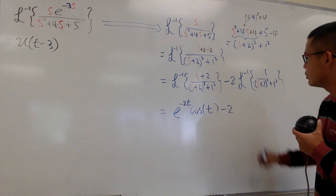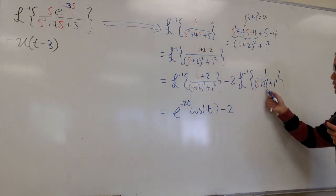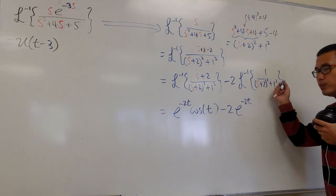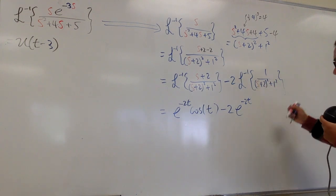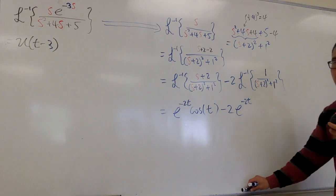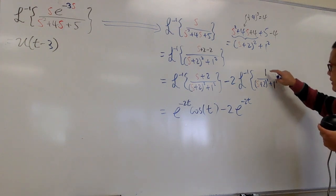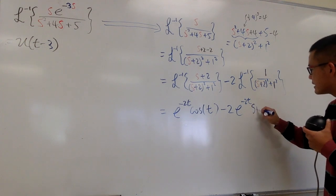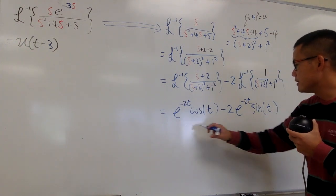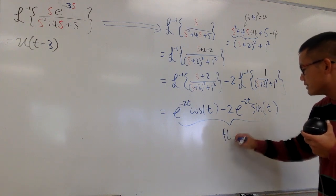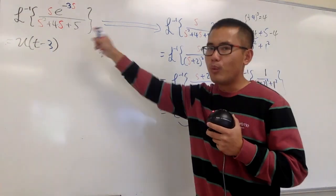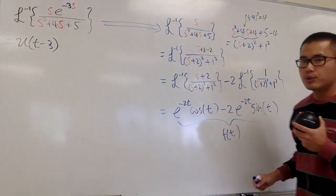Bringing down the negative 2: because we again have s plus 2 squared in the denominator, we multiply by e to the negative 2t, and this time we get a sine function. The 1 squared in the denominator matches the 1 on top, giving sine of t. So the second term is negative 2 times e to the negative 2t times sine t. This whole expression is our f of t.